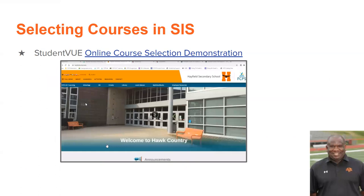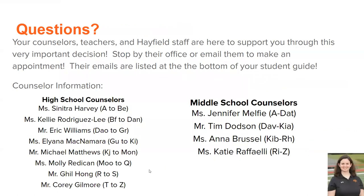After we finish up here, we're going to ask your teacher to play this demo about how to select courses in student view. You are able to go ahead and start selecting courses in student view. Your counselor will finalize those selections with you when you have your academic advising meeting to make sure the course codes are correct and that you have the right number of classes and alternates for success next year. If you have any questions, your counselors, teachers, and wonderful Hayfield staff are here to support you. Feel free to make an appointment with your counselor — their information is listed here as well as at the bottom of your student guides.